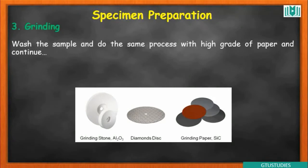Once the sample is ready, first wash it. Then do the same process with a higher grade of paper and continue grinding. Once the component is ground, wash it again and repeat the same process with the next higher grade of paper to continue grinding.